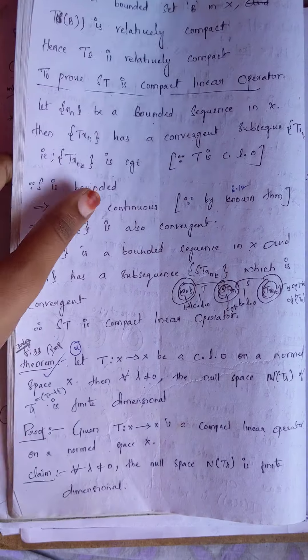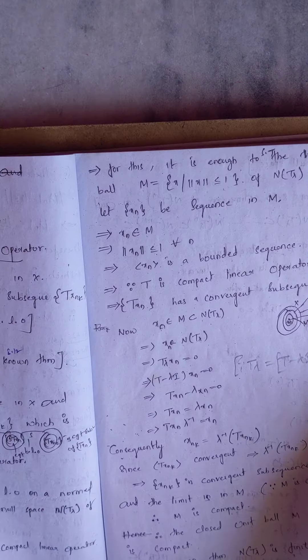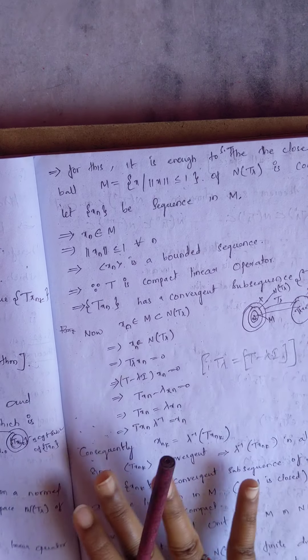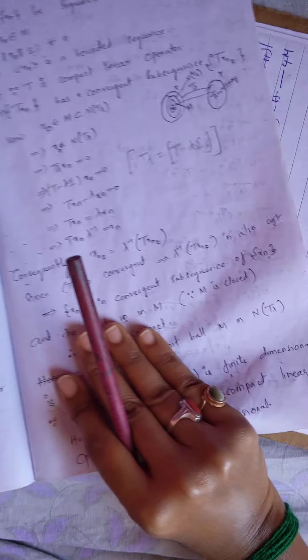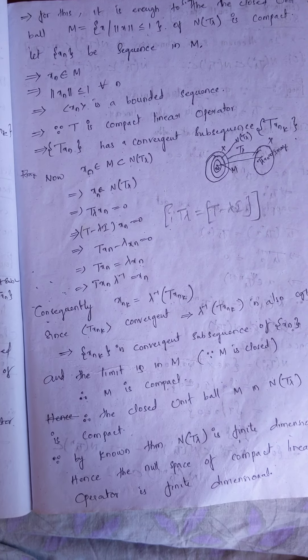For this we are considering. It is enough to show that the closed unit ball M in N(T_lambda) is compact.